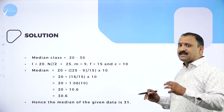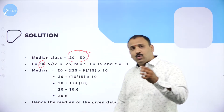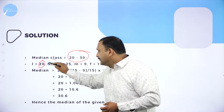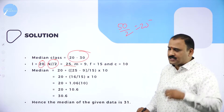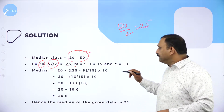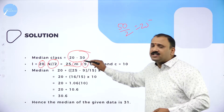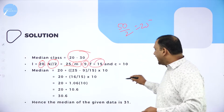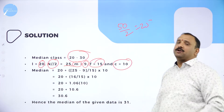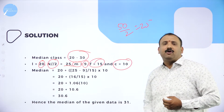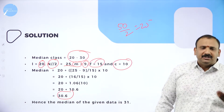The median class is in the range 20–30, where 20 is the lower value. The n/2 factor: 50 divided by 2 equals 25. The m value — the cumulative frequency corresponding to that segment — was 9. The frequency f was 15, and the class width c was 10. Putting these into the median formula, the median for the given data is 30.6, which rounds to 31.